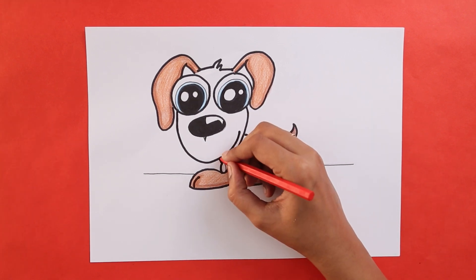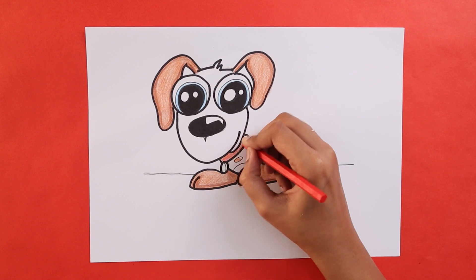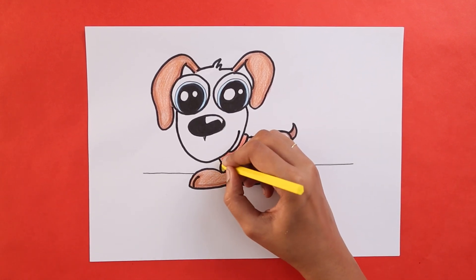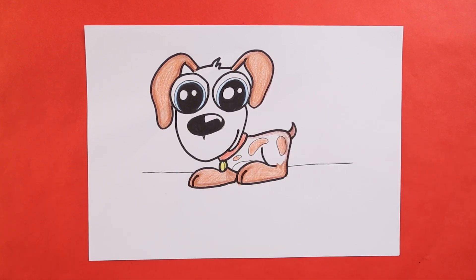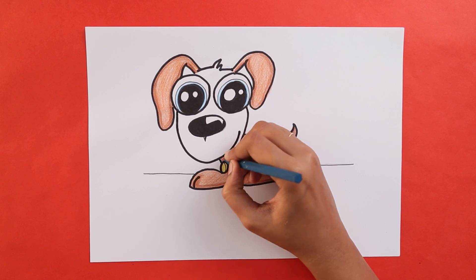You can color your dog's tag with the color red. If you don't have red, you can also use any other color. You can then use a darker color to shade the inside of the collar.